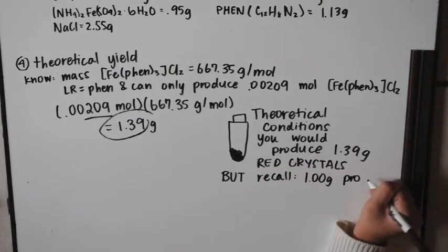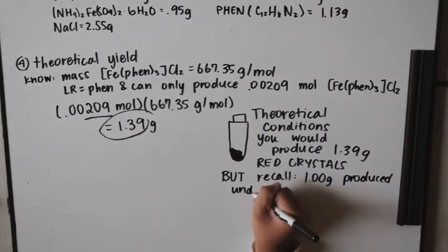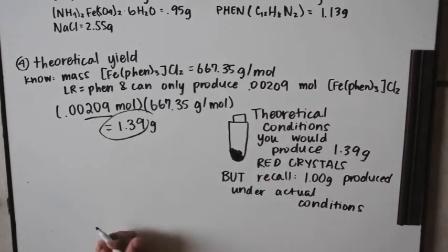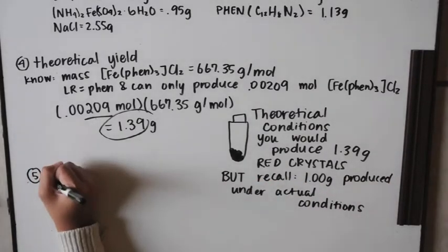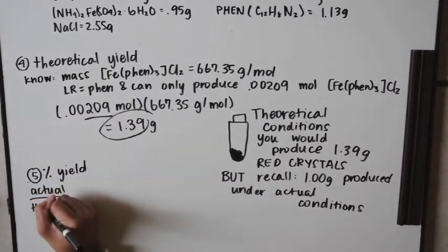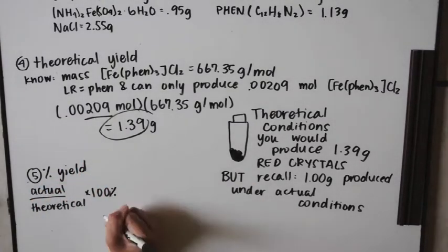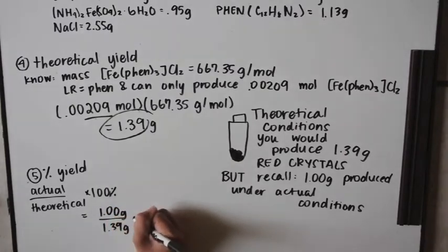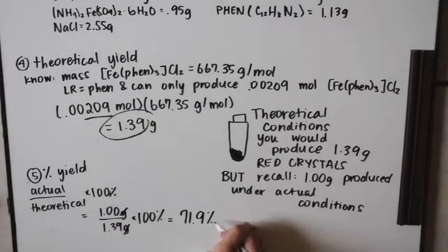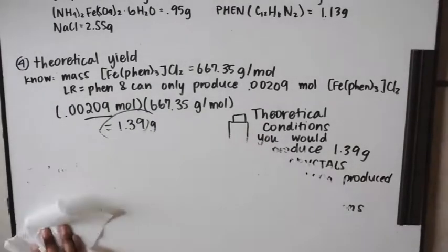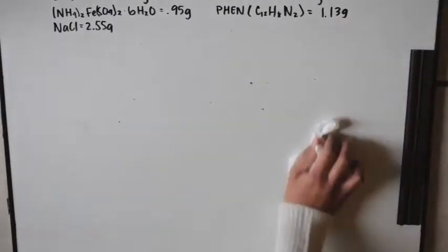We only produced one gram. For number five, percent yield is actual over theoretical times 100. The actual yield is 1 gram and the theoretical yield is 1.39 grams, giving a percent yield of 71.9%.